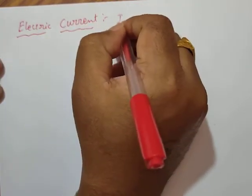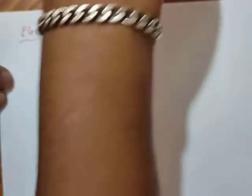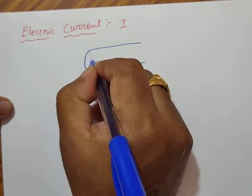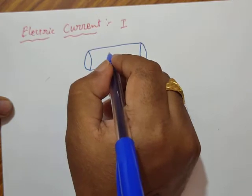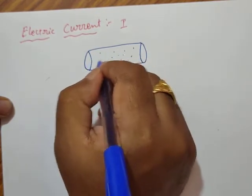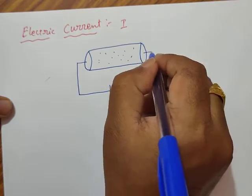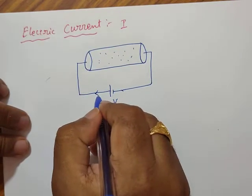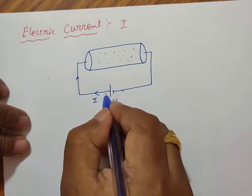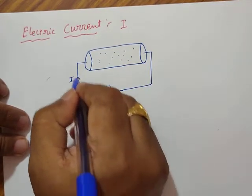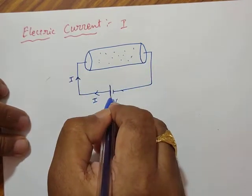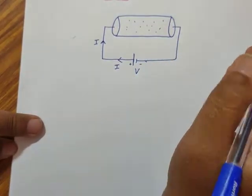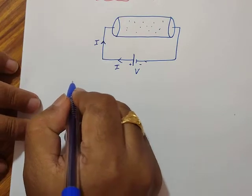First of all, how do we define electric current? Current can be defined as the rate of flow of charges. So this is a conductor, and through this conductor if you apply some potential difference, these are the free electrons available. If you apply potential difference V, the electrons will move and current direction by convention is taken opposite to the electron flow — from positive to negative terminal of the battery. Suppose Q charges are flowing.